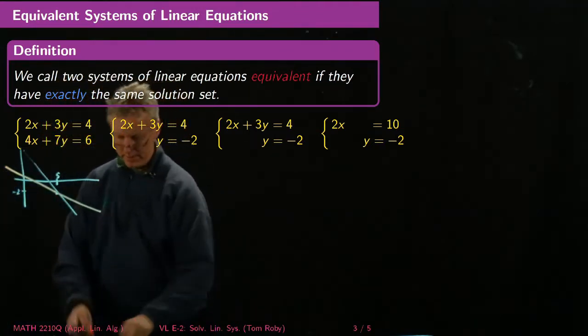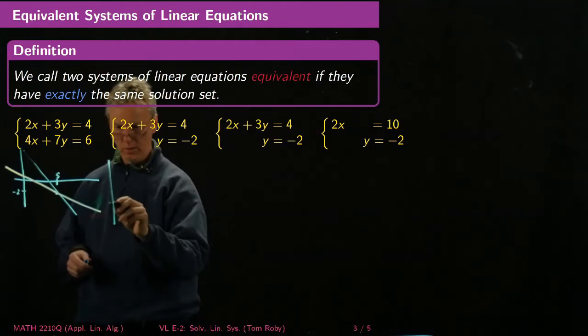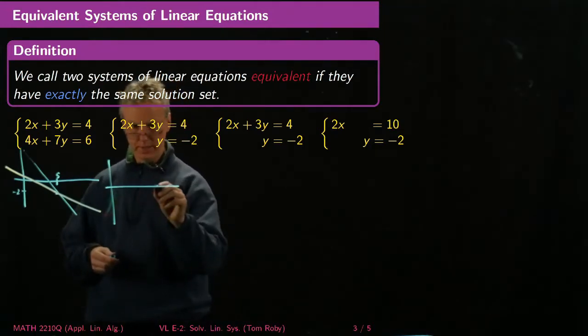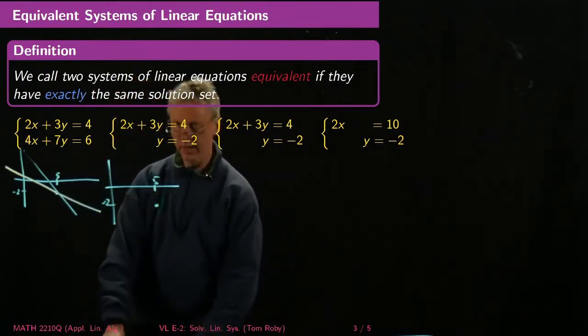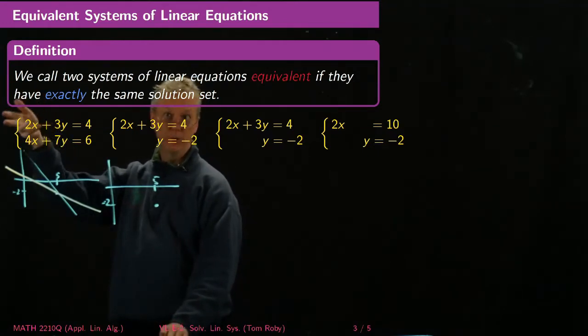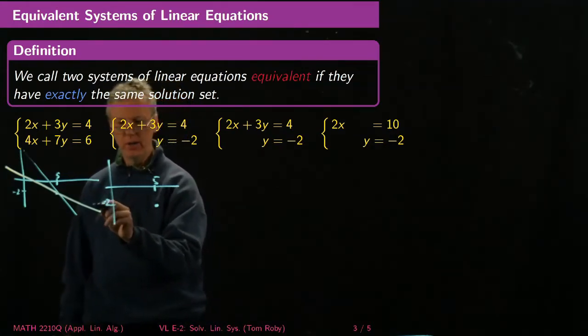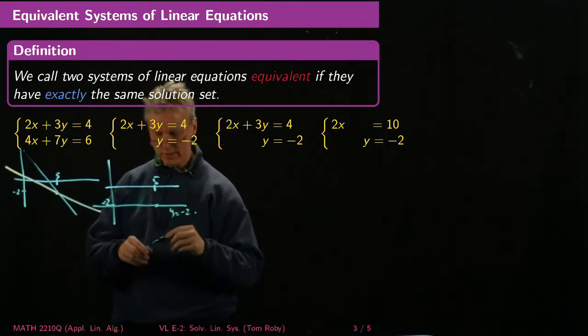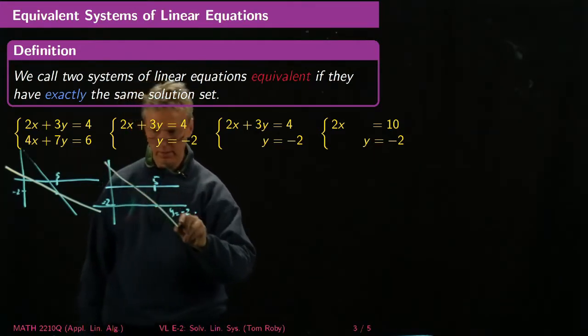Now, what happened at that next step where I replaced my system with a different system? My solution is still 5, negative 2, right? That hasn't changed because when I multiplied one equation by 2 and subtracted it, or multiplied by negative 2 and added it to the other one, that didn't actually change the solution set. The solution set is the same, but now notice that this is one of the equations. This is the equation y equals minus 2, and then the other equation is still slanted on an angle as it was before.